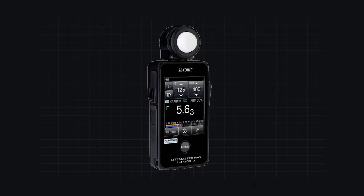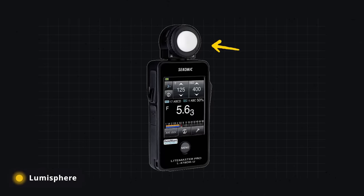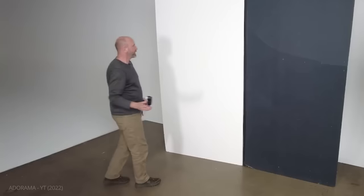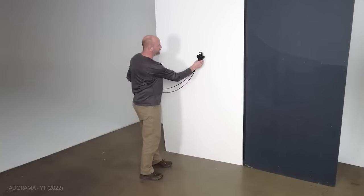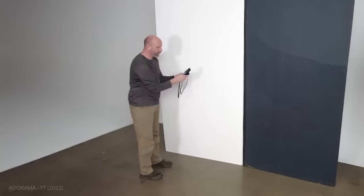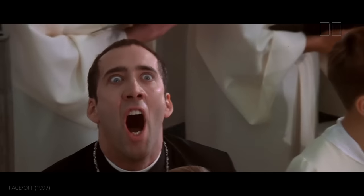Incident meters measure the amount of light hitting an object. They can be identified by the white sphere near the top of the device called a lumisphere. The sphere allows the equipment to take a reading of the light hitting the subject from all 180 degrees, mimicking the spherical shape of a face.